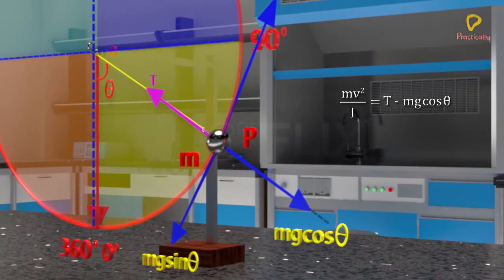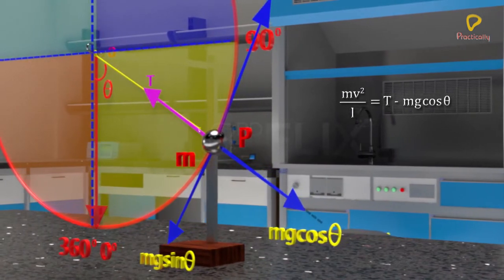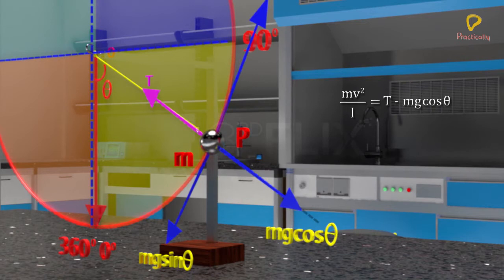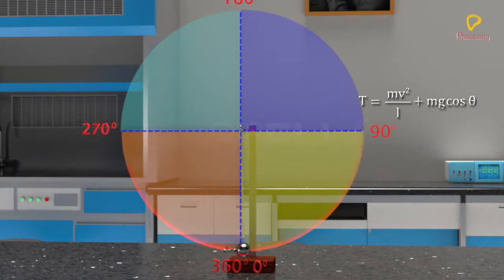Therefore, Mv square by L is equal to T minus Mg cos theta. Hence, tension in the string is Mv square by L plus Mg cos theta.